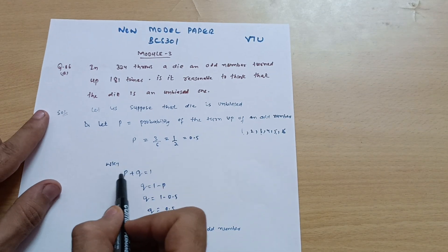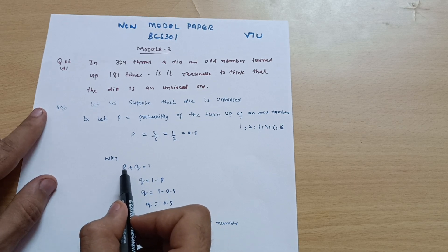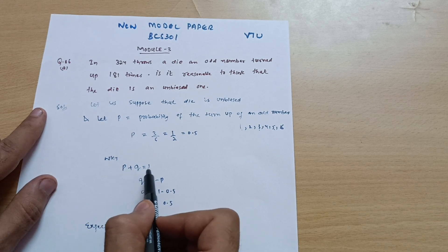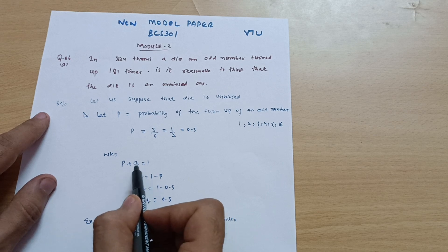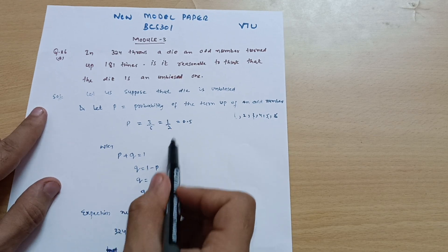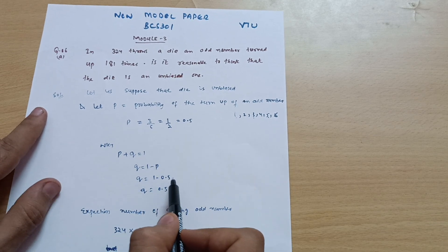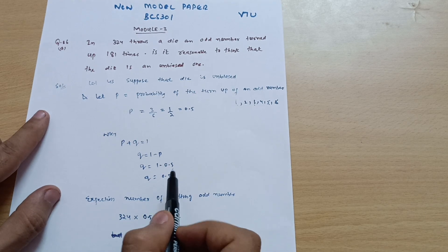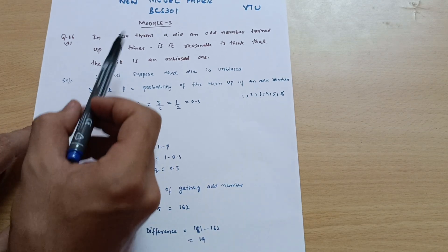And also you know that p plus q is equal to one. That is your probability of event plus probability of not event is equal to one. So q is equal to one minus p. Q is equal to one minus 0.5, so q is equal to 0.5.